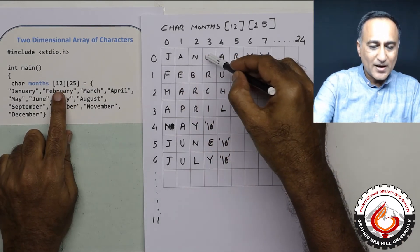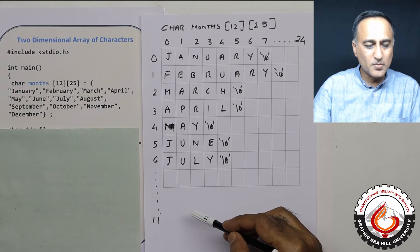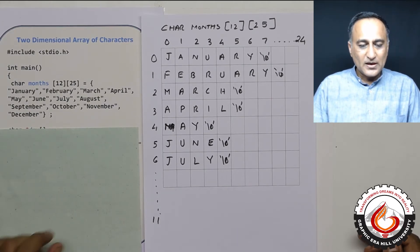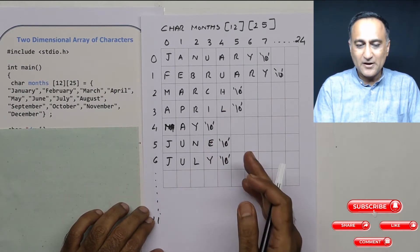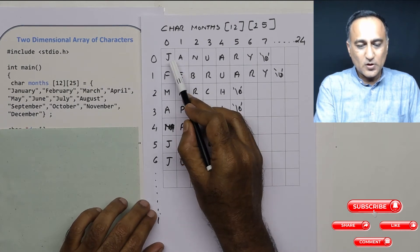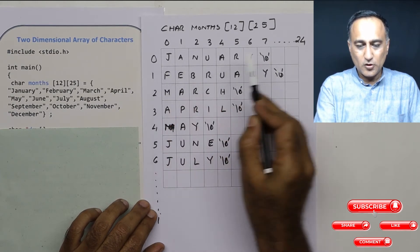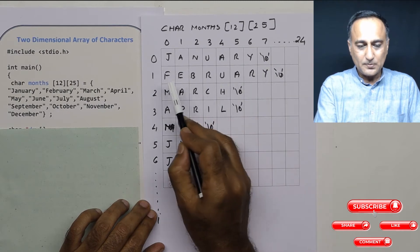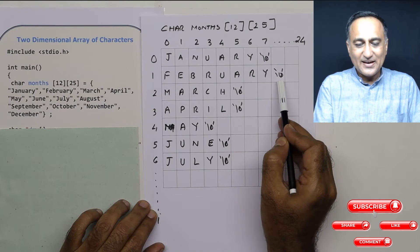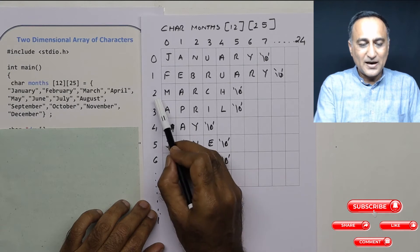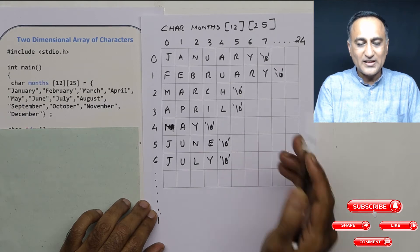In the 0th row I'm going to have January, 1st row February, 2nd row March, all the way to the 11th row which will have December. The number of rows are 0 to 11, and columns are 0 to 24. January is stored in the 0th row as J-A-N-U-A-R-Y, with a null at the 0th row, 7th column. February starts at the 1st row, 0th column and ends at the 1st row, 8th column with a null. March starts at the 2nd row, 0th column and ends at the 2nd row, 5th column with a null.